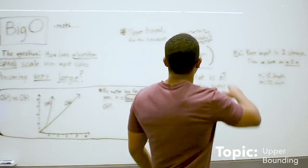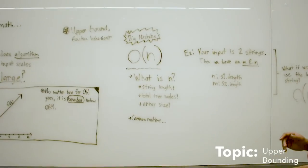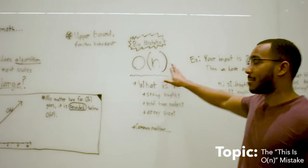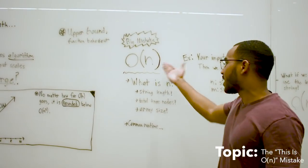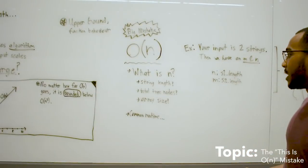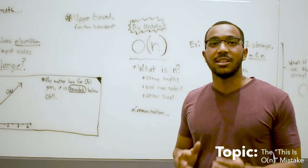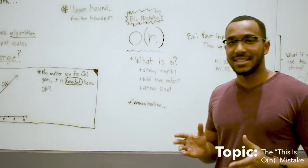Here's a very big mistake that's made with runtimes. O of n linear time is a very common runtime, but what is n? What is n? The string length? Is it the amount of tree nodes? Is it the size of the array? What is n?